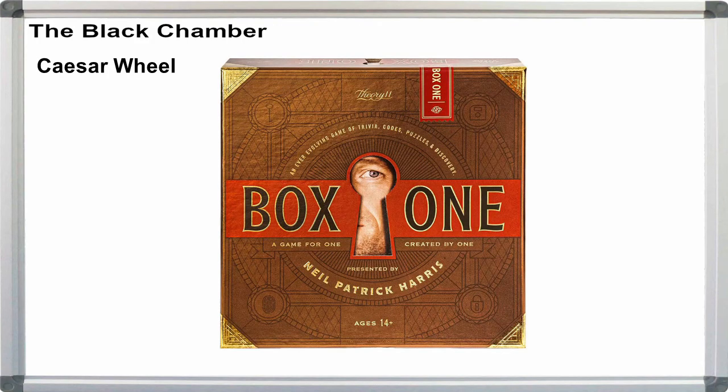Box 1, also from Theory 11 and NPH, available from Target, uses a similar idea, but that one's not a true card and grill. On the other hand, Box 1 does employ a modified Caesar wheel.